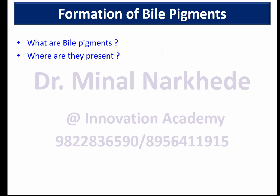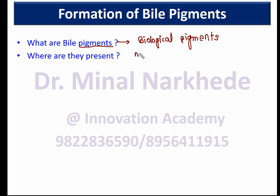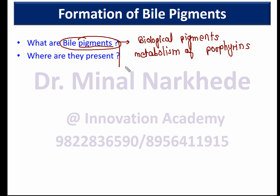The first question is about what are bile pigments. As the name indicates, these are pigments produced in a living body, so they are called biological pigments. These biological pigments are produced during the metabolism of porphyrins. Porphyrins are heterocyclic organic compounds consisting of modified four pyrrole rings. Bile pigments also consist of a chain of four pyrrole rings.